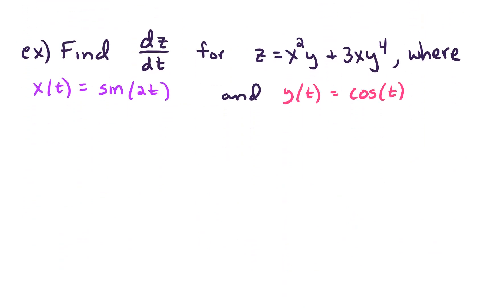Let's do an example. We want to find dz/dt for z equals x squared y plus 3xy to the fourth, where x of t equals sin of t and y of t equals cos t. Let's start with our tree. At the very top of the tree we have z, and z is a function of x and y. Each of those are functions of t. So we're interested in finding dz/dt, and we have to go down all the branches that start with z and end in t.